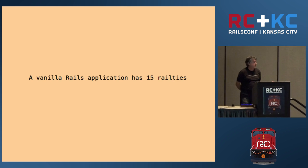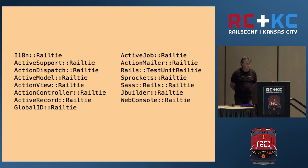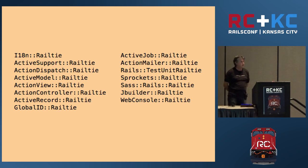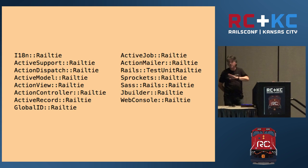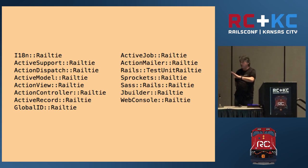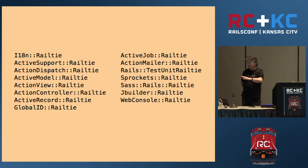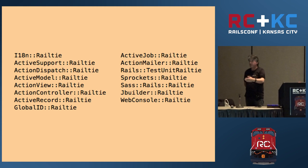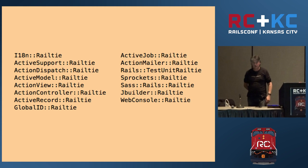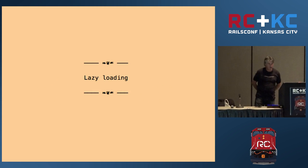A vanilla Rails application has 15 railties. Everyone that needs to integrate with the boot process has to define a railtie.